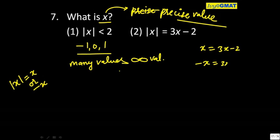Or minus x equals 3x minus 2. X equals 3x minus 2 will give me 2x equals 2, so x equals 1. This will give me 4x equals 2, that is x equals 1 by 2.